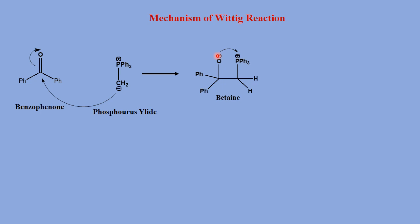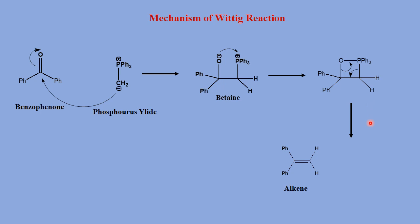The O-minus (negatively charged oxygen) attacks on phosphorus because it is nucleophilic and phosphorus is electrophilic in nature. Phosphorus has a good affinity for oxygen. So there is an attack of O-minus on phosphorus, leading to the formation of a cyclic intermediate — a four-membered oxaphosphetane ring. These bonds then transfer, forming a carbon-carbon double bond.